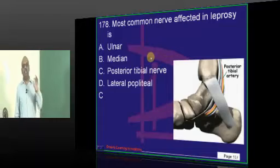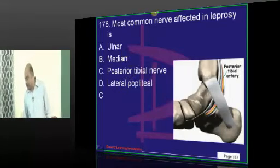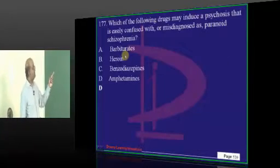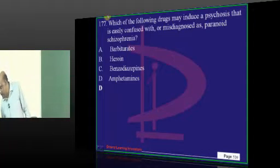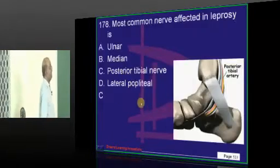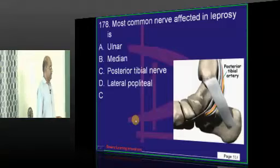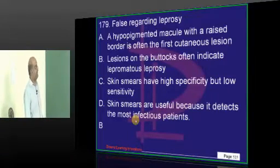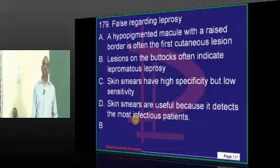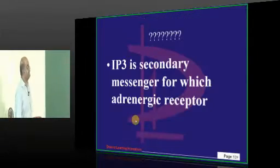In leprosy, it is the posterior tibial nerve which is classically affected. The most common nerve affected in leprosy — as already discussed. If you find lesions on the buttocks, it indicates borderline leprosy, not lepromatous leprosy — that is what we have to basically appreciate.